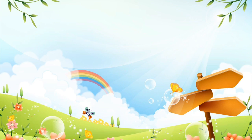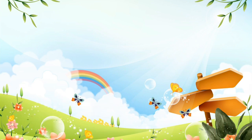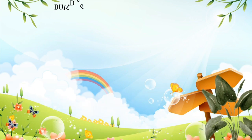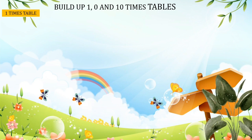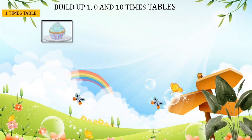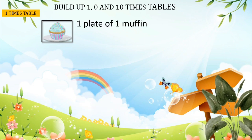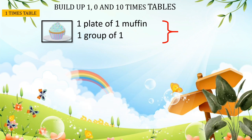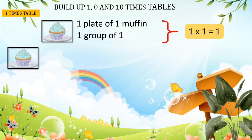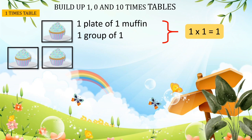Hello class, today we are going to learn how to build the one, zero, and ten times tables. We will start with the one times table. There is one plate of muffin — it means one group of one. How many muffins altogether? There is one, so we can say: one times one equals one.